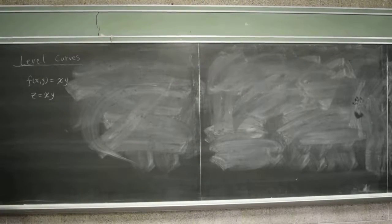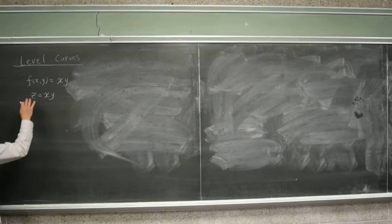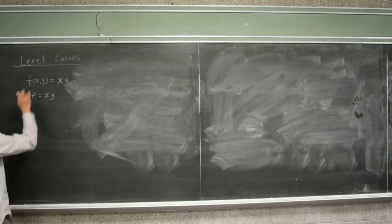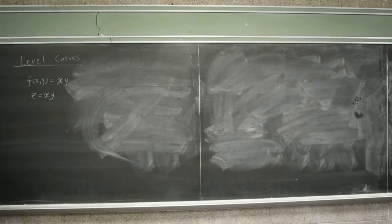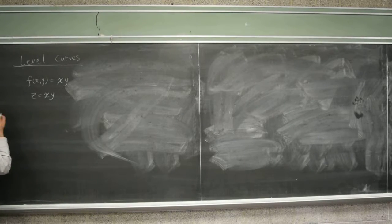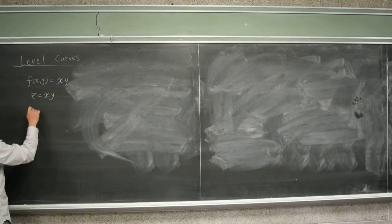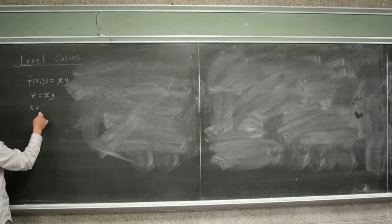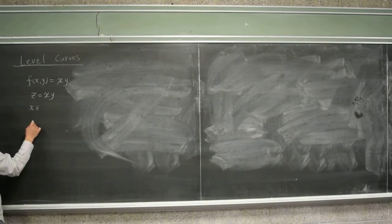So we want to draw the graph of z equals xy using level curves. Now if we try to use the traces to just draw this, for example if we do the xz trace, what's going to happen?